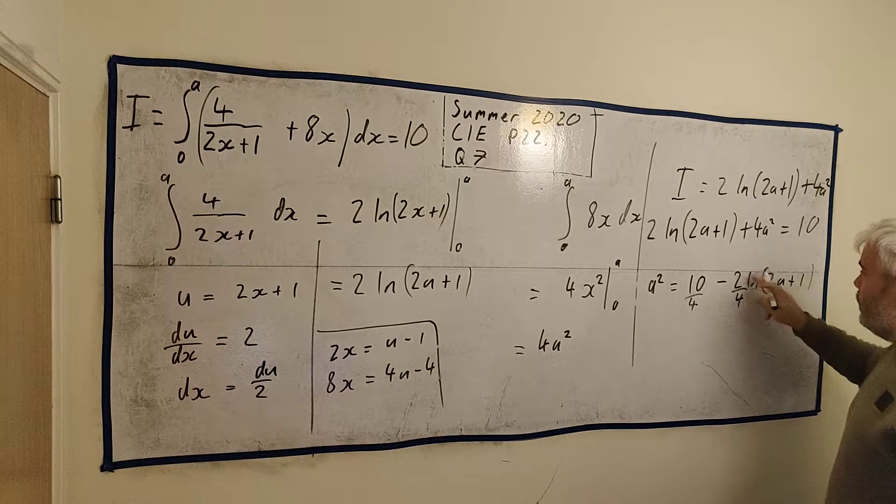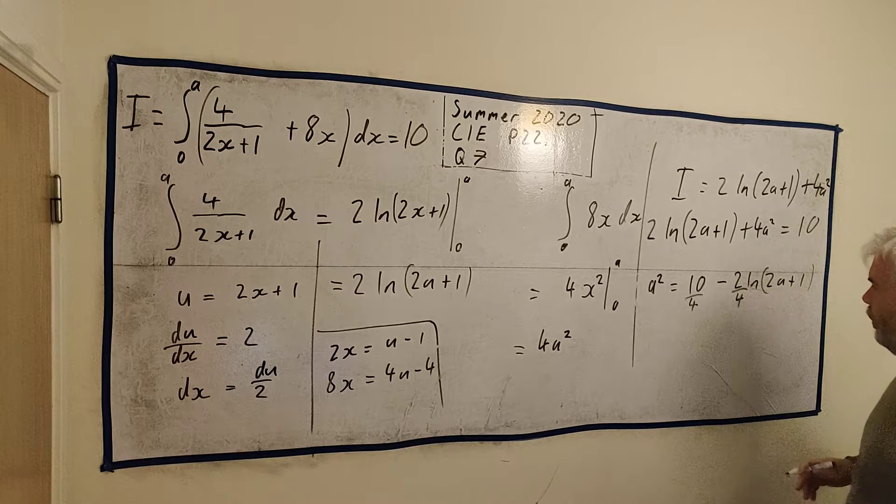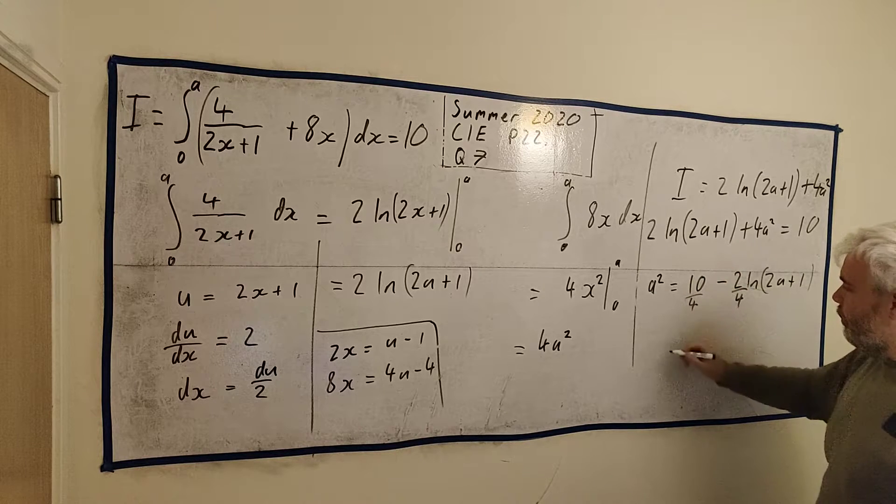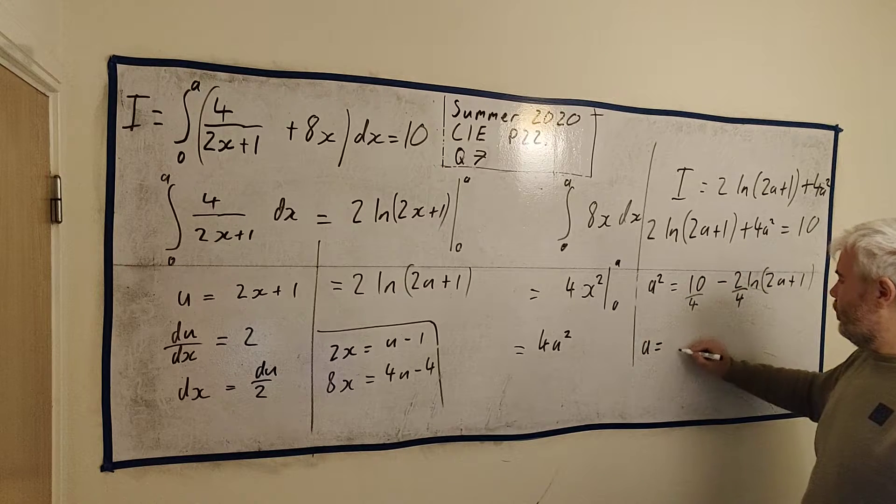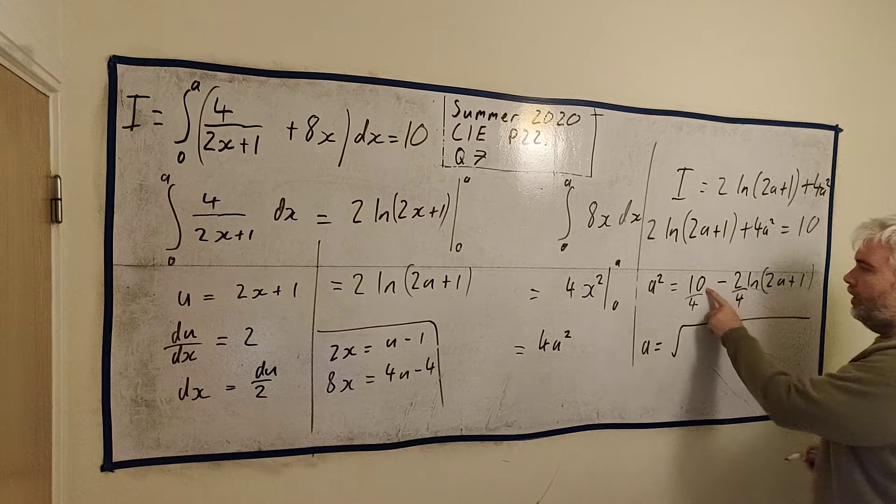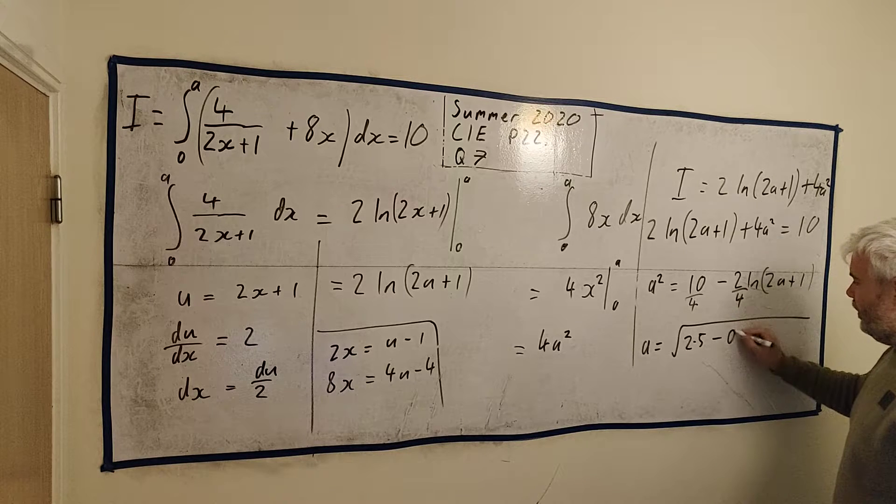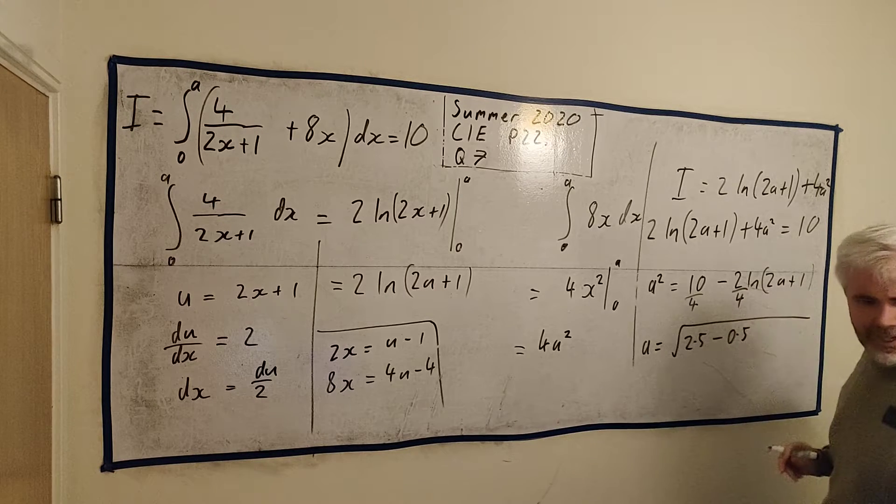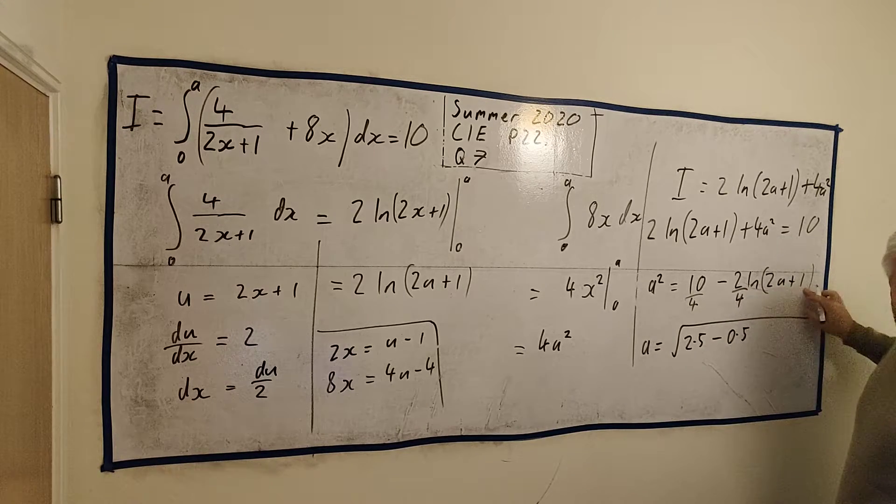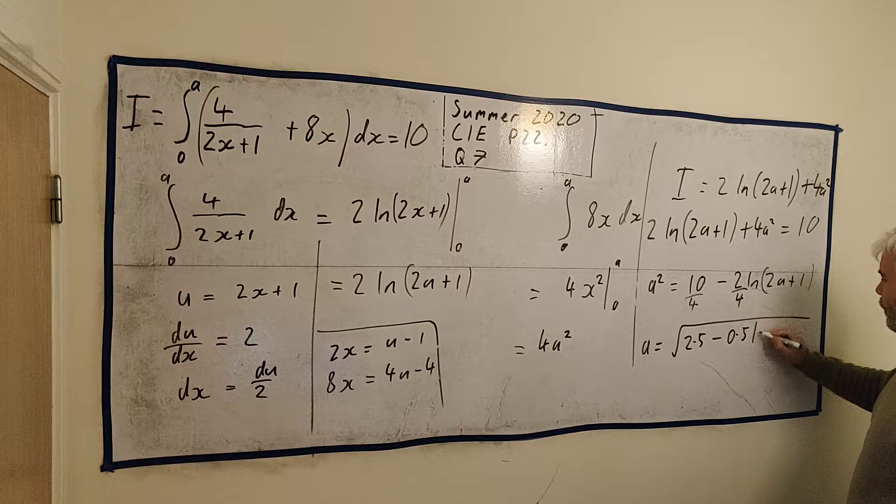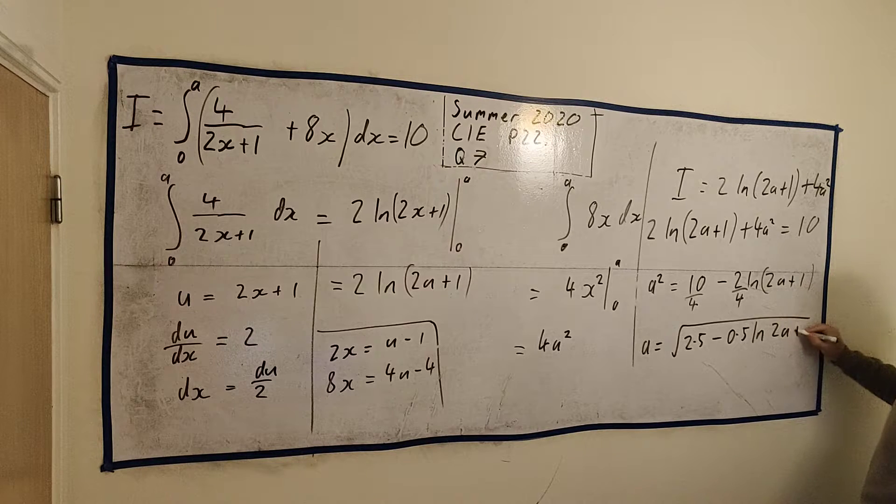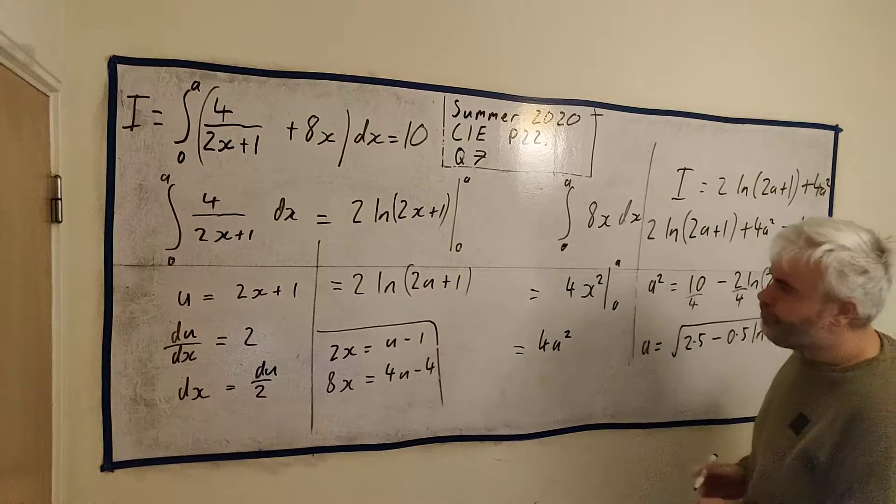So how do we do that? This is what we found this integral to be equal. But they already told us it's equal to 10. So we get 2 natural log of 2a plus 1 plus 4a squared is equal to 10. Now they've given us a clue what they want this to look like. They want a on its own and everything else in a square root. So that means probably getting a squared on its own.